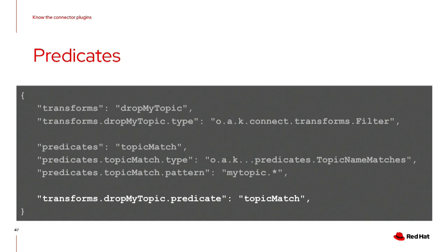As well as implementing your own connectors, you can also implement your own converters, transformations, and predicates. They are fairly straightforward Java APIs with practically just one method to implement. However, there are loads of built-in predicates, transformations, and converters, plus many available in the open source community, so often you can run very different pipelines by just choosing and configuring those different connector plugins.